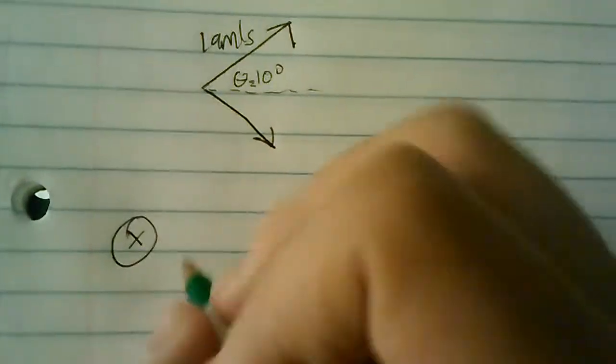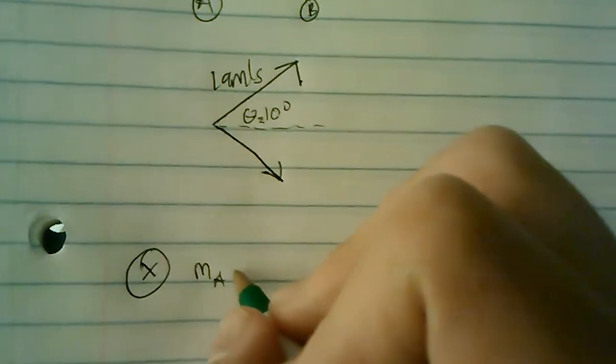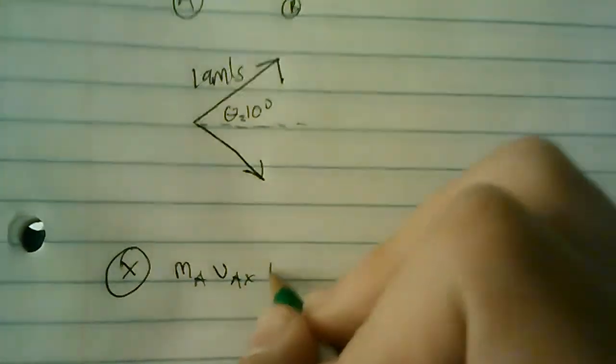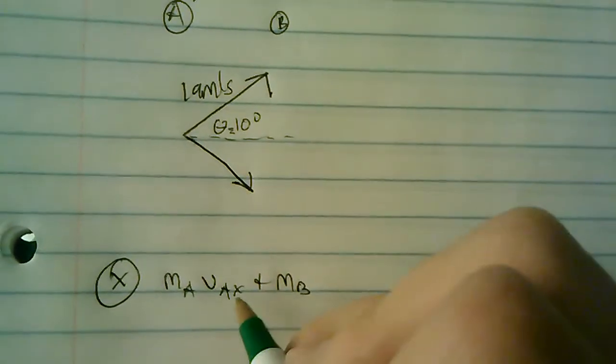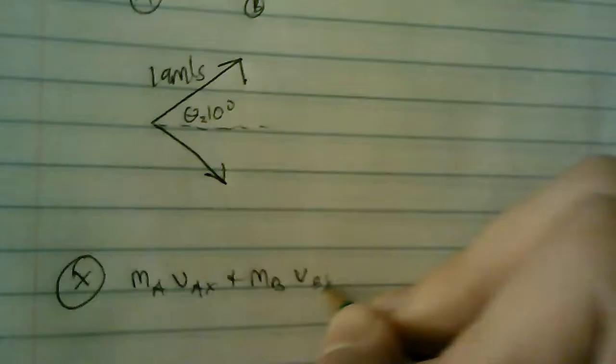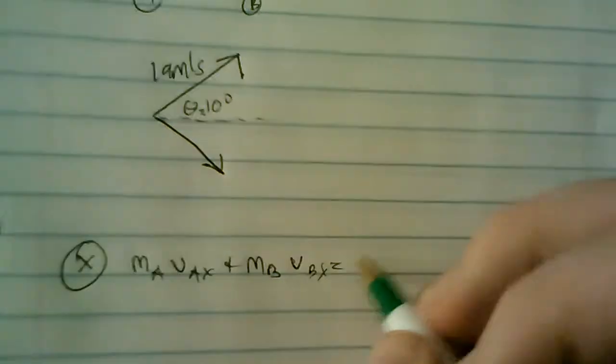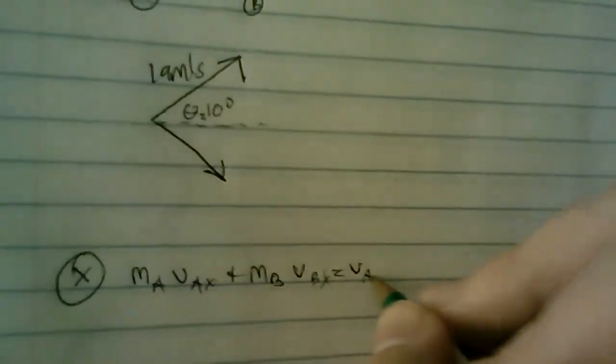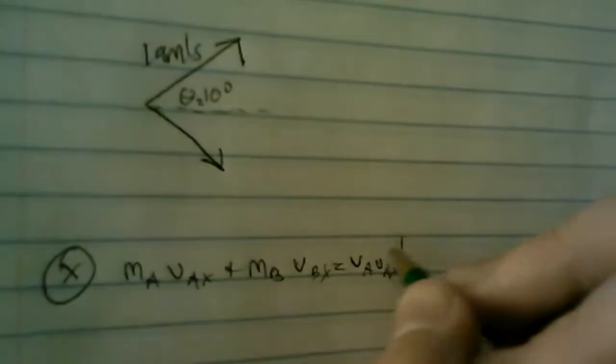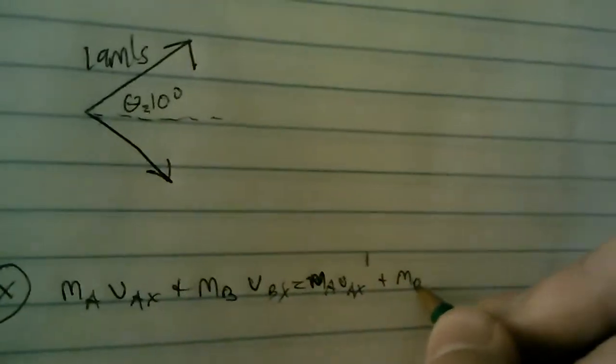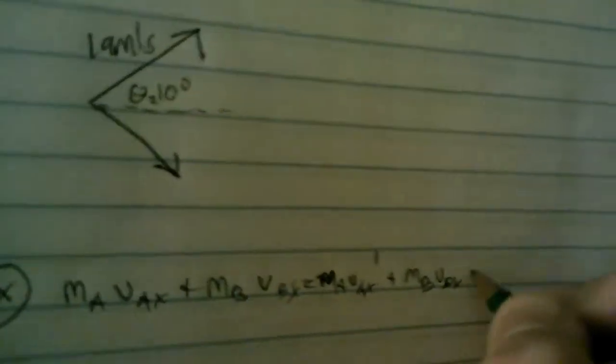So what we need to do is work out both the x and y directions. So, x direction. Because of conservation of momentum, we know that M_A V_AX, or I guess just M_A, plus M_B V_BX equals M_A V_AX tick, plus M_B V_BX tick.